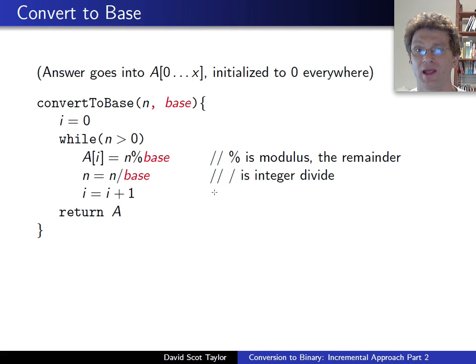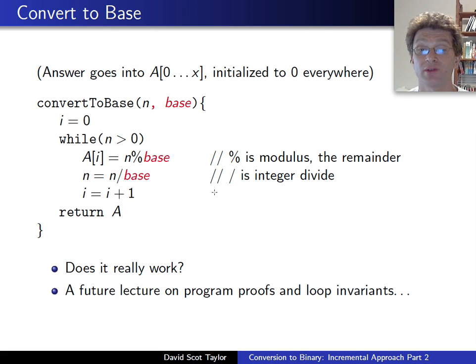So great. Now, I sort of by hand, which is a little ugly, went through one example of how this worked. Does it work? It does really work, but I'm going to do a more formal proof of how it works in another lecture. That'll be what I'm talking about generally about proofs and loop invariants. So that's going to be it for our conversion to binary.